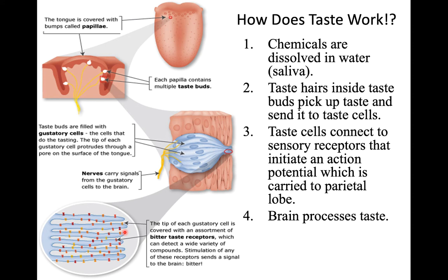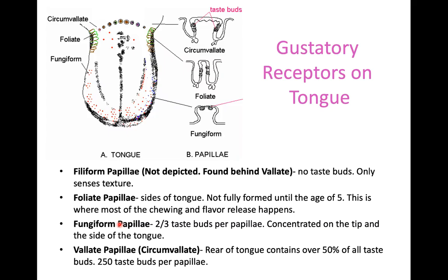Starting with the big picture: on your tongue you have papillae — little and big dots. Each papilla houses taste buds connected by neurons that converge and go to your brain. When you eat something, it dissolves in saliva, which flows into the crevices around the papillae. The chemicals in the saliva bind to hair-like structures on the taste bud cells that have chemoreceptors on them. These send a signal through the cells into the neuron, which signals the brain.